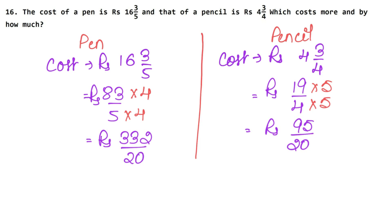Now because the denominator is the same, the numerator is greater. So which cost is greater? The pen. So cost of pen is more than the cost of pencil. By how much? We will minus the small value from the large value. If you want, you can also minus this from this or this from this.